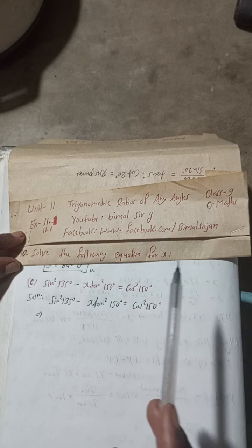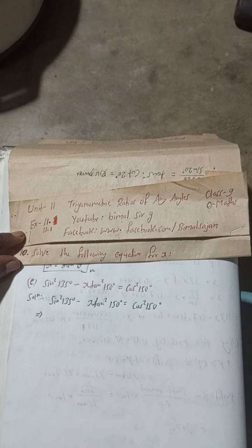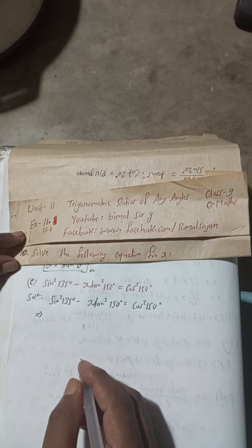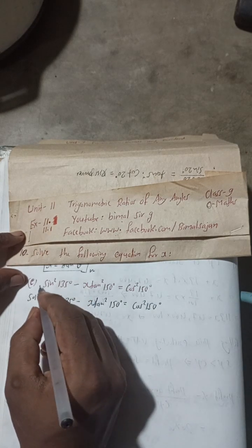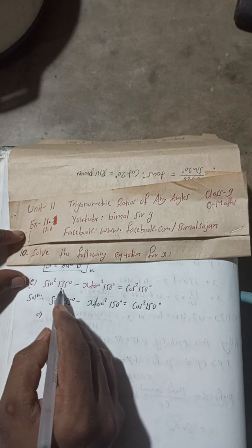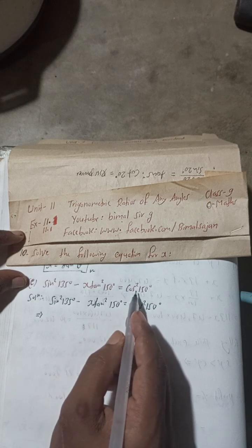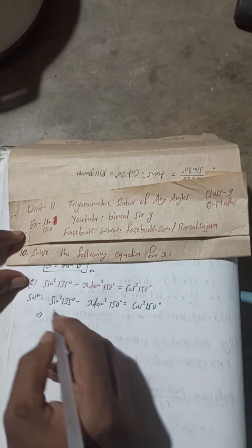Okay, all that idea you can get through that. Short video is uploaded here, so let's begin the solution. Here is number 10. Solve the following equation for x: sin²135° - x tan²150° = cos²150°. So here I have written this same part here.